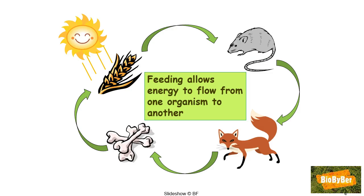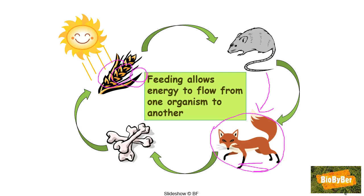Other organisms eat the herbivores — for example, our friend Mr. Fox here. These are carnivorous organisms, or carnivores. So energy in the form of chemicals then gets passed on to the carnivores. This sequence of organisms beginning with the plant and ending with the carnivore is called a grazing food chain. Energy is passed along the food chain from one organism to the next.